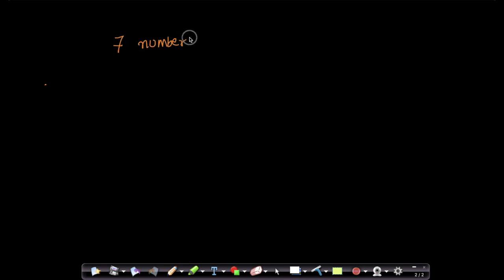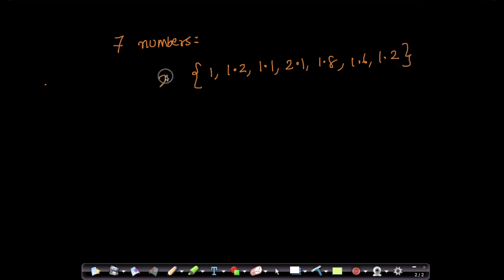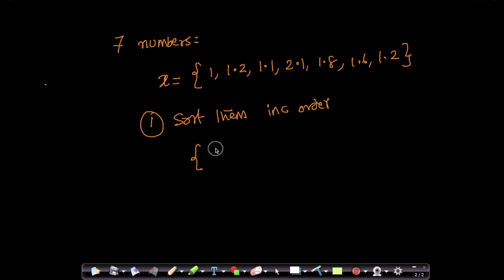Let's understand how to compute the median. Assume I'm given seven numbers: 1, 1.2, 1.1, 2.1, 1.8, 1.6, and 1.2. This is my set of observations for a variable x — it could be petal lengths or anything. The first step is to sort these values in increasing order. Sorted, they become: 1, 1.1, 1.2, 1.2, 1.6, 1.8, 2.1.